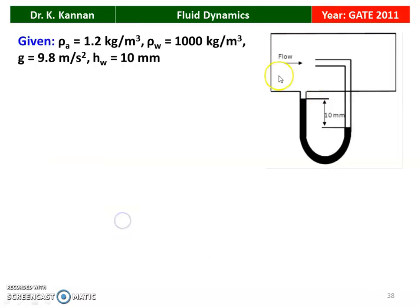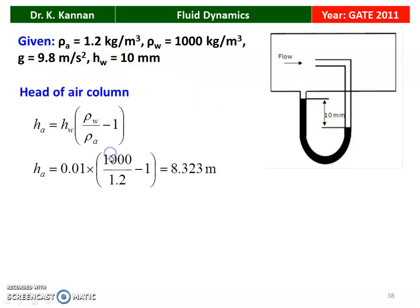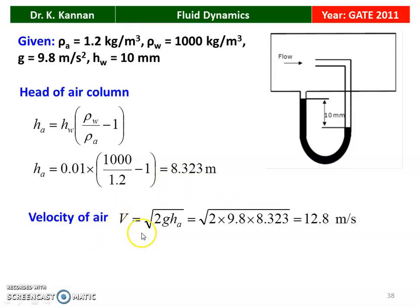We will see how in the next slide. The density of air flowing through the pipeline is 1.2 kg/m³, density of manometric fluid (water) is 1000 kg/m³, g = 9.8 m/s², and head of water column H_w = 10 mm. Converting to head of air: H_A = H_W × (ρ_W/ρ_A − 1) = 0.01 × (1000/1.2 − 1) = 8.323 meters. Velocity of air V = √(2GH_A) = √(2 × 9.8 × 8.323) = 12.8 m/s.